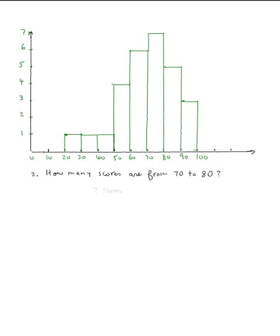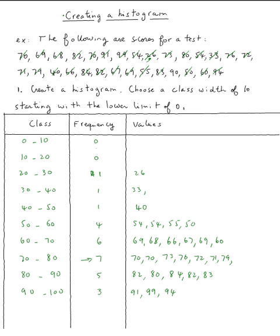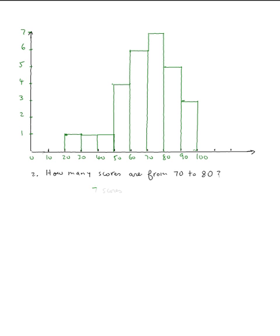So, that's the histogram. Now, we want to answer the question, how many scores are from 70 to 80? Of course, you can just look here at the table. So, the answer will be 7 scores. And, that's it for this example.